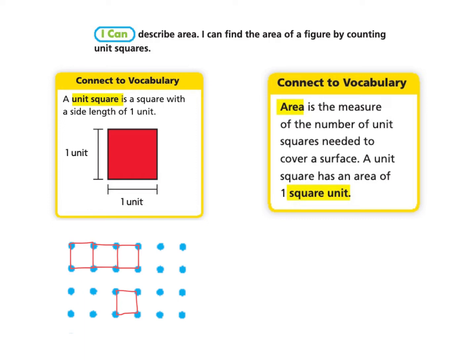I can also draw one down below here, and now I'm showing that there are four unit squares drawn. Now let's look at area. Area is the measure of the number of unit squares needed to cover a surface.